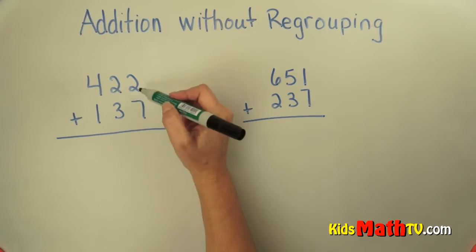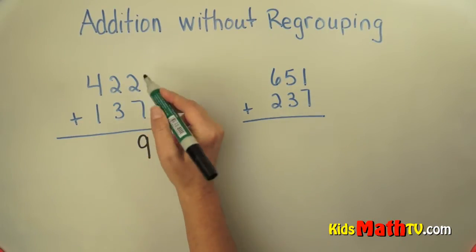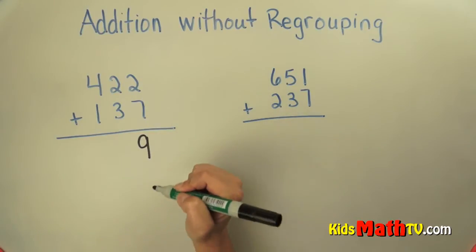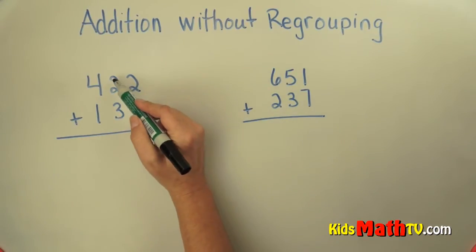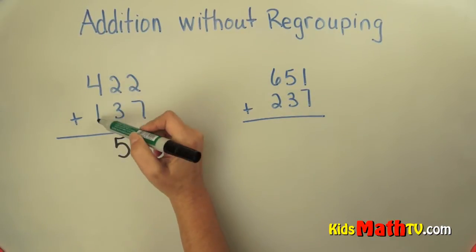...the ones together. Two plus seven is nine, and I record that in the ones column. Two ones and seven ones equals nine ones. Here I have two tens and three tens equals five tens. Now I go to...